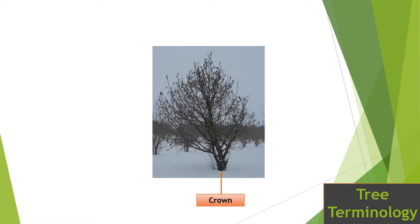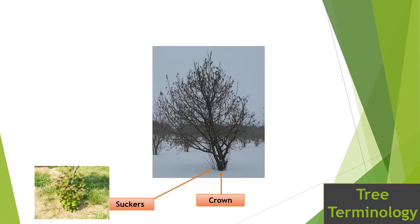Suckers are growth that the tree puts out from either the roots or the base of the plants. Hazelnuts are prolific producers of suckers and growers generally have to go in and remove those two to three times per season. You also need to be aware that suckers are very young, tender growth that can attract a number of pests if not removed. However, the presence of suckers also allows the grower to save the tree — if the main portion of the plant has been killed, sometimes a sucker can be trained to start some fresh growth.